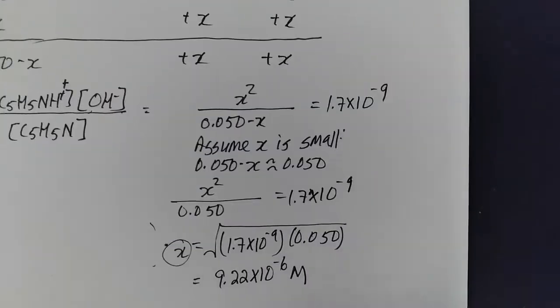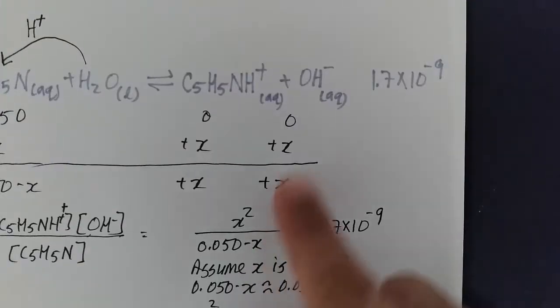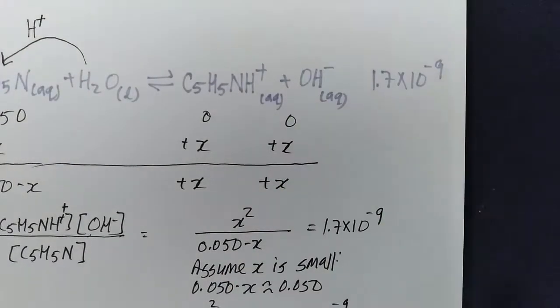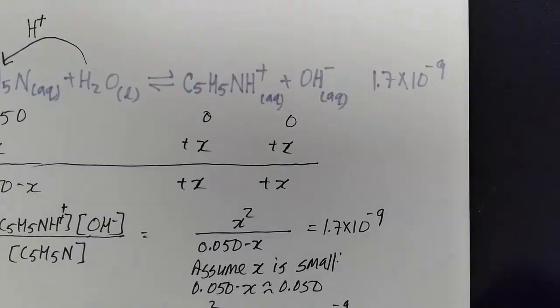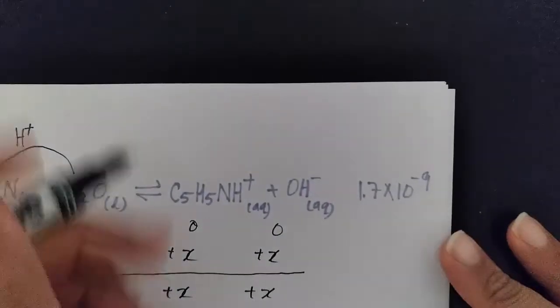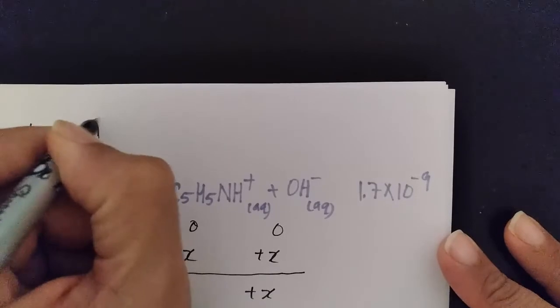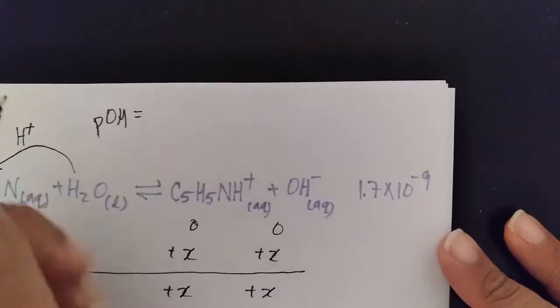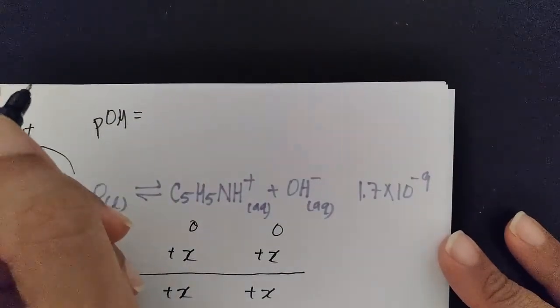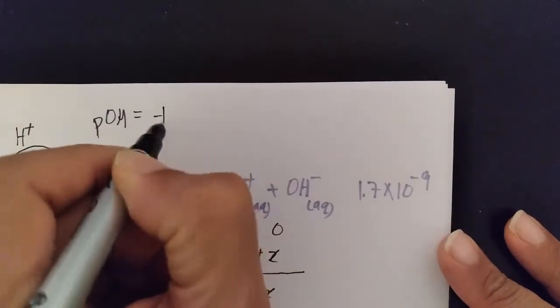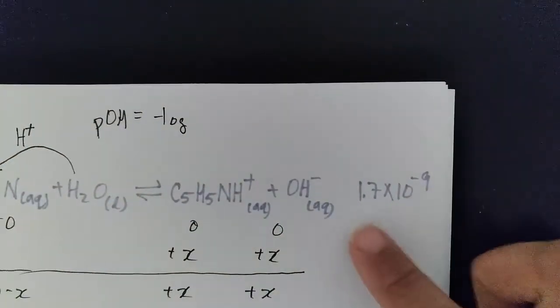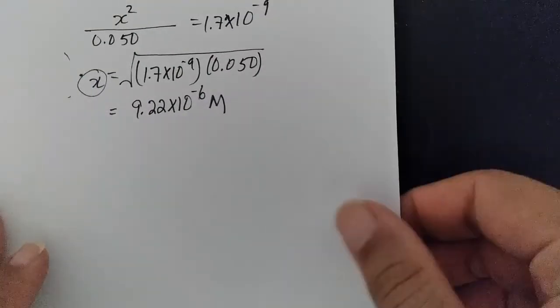So because X is symbolized by my OH minus concentration, I can calculate pOH first and then from there calculate pH. So let's calculate pOH, recognizing pH plus pOH is equal to 14. So pOH is minus the log of the concentration of OH minus, but I just figured that out, and it's 9.22 times 10 to the minus 6.